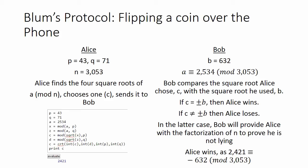If plus or minus x and plus or minus y are the four square roots of a modulo n, then the greatest common denominator of x minus y and n will either be equal to p or to q. Bob will use this information to find one of the factors of n, and then it is trivial for him to solve for the other prime factor of n.